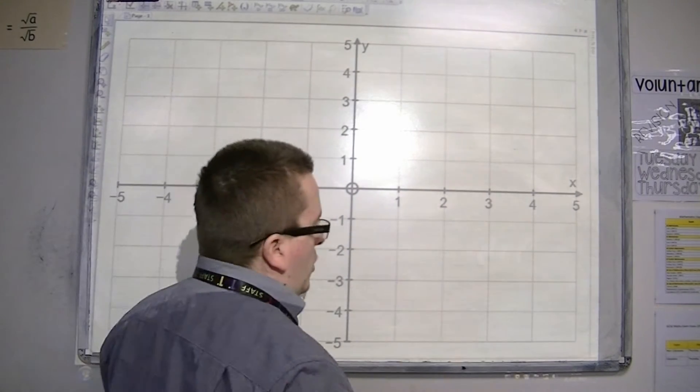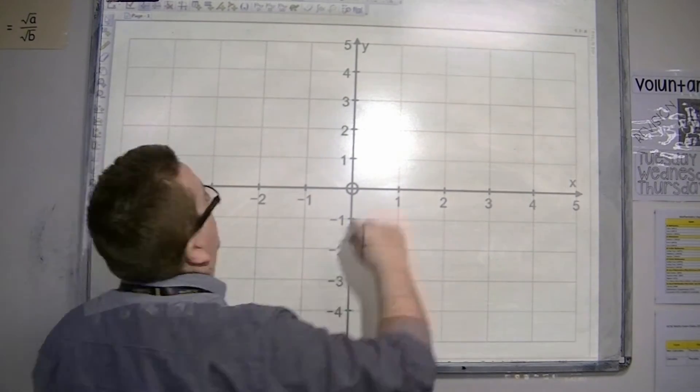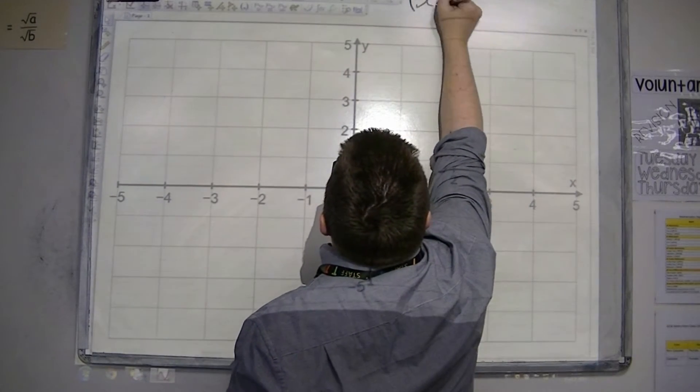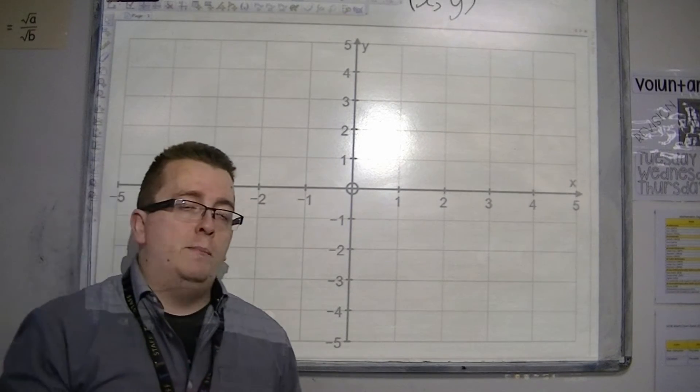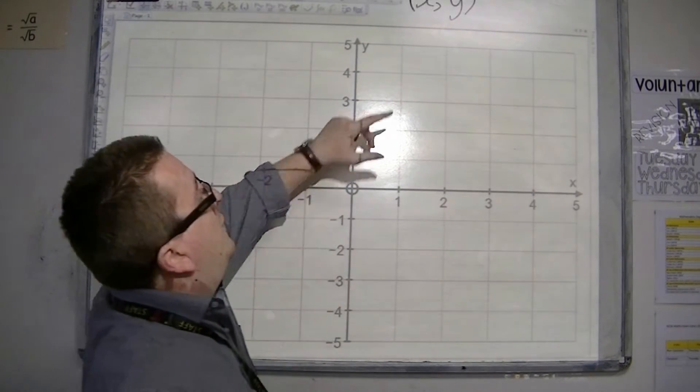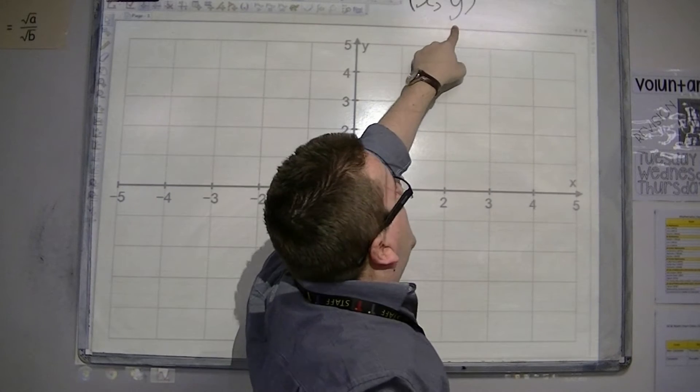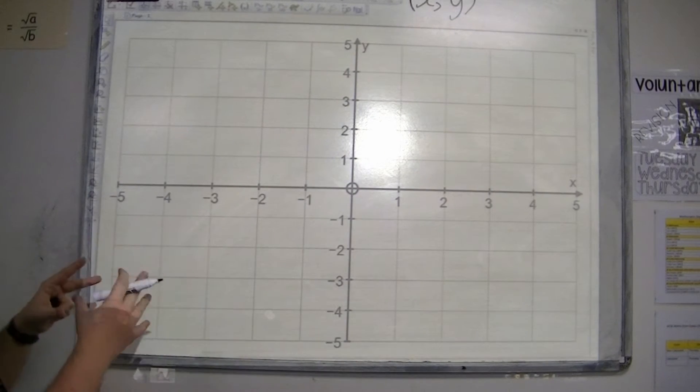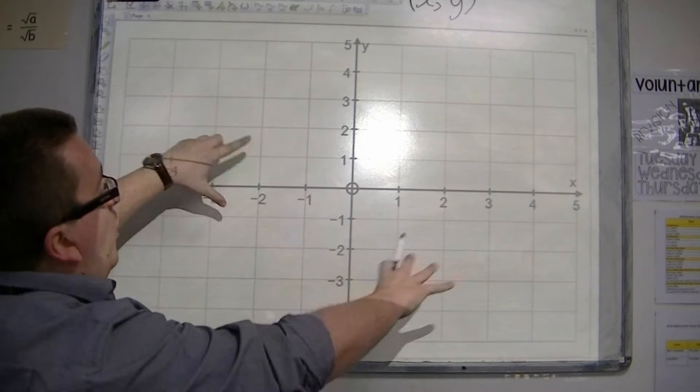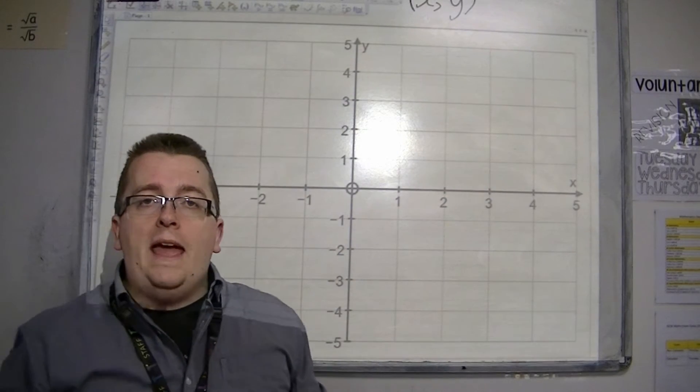So coordinates are written like this. They are written in brackets with a comma between them. And you will be given an x-coordinate and a y-coordinate. And all of these coordinates that we have relate to a point on the x-y grid.